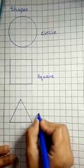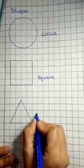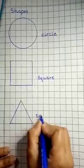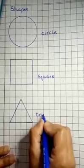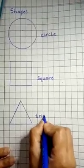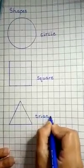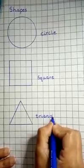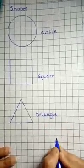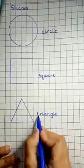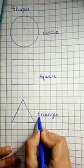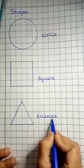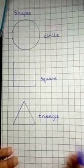Now we get the shape of triangle. So let's write its spelling. T R I A N G L E. Triangle. Spell it. T R I A N G L E.